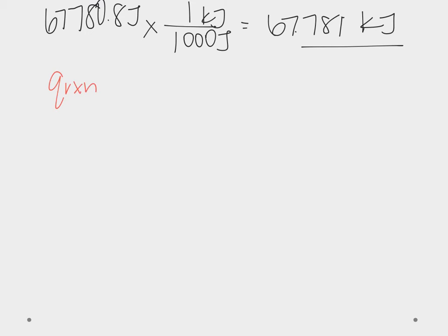So now going back, Q reaction plus 67.781 kilojoules plus 33.21 kilojoules all equals zero. So we can combine like terms.